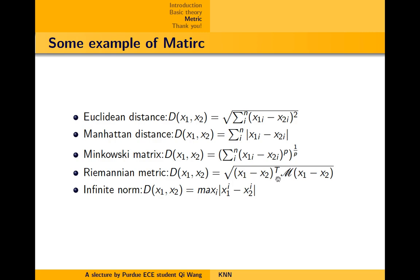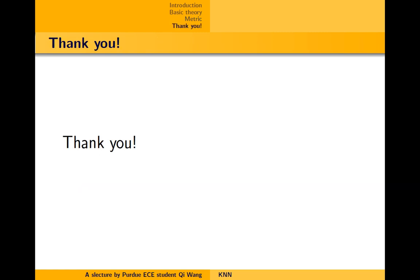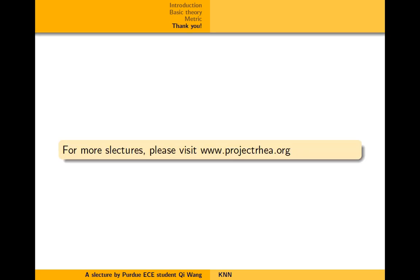So, this can be called a distance. Also, we have the infinite norm, which is this. It is very commonly used in some statistical model selection problems. Okay? That's all I want to talk about KNN. Thank you very much for your attention. For more lectures, please visit www.projectrhea.org.